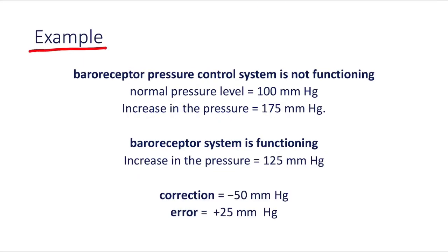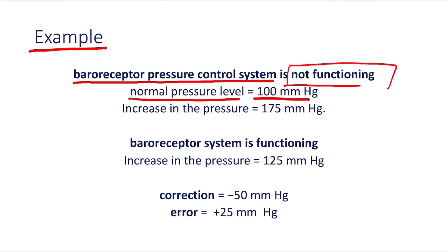Now let us see an example. We will look at the baroreceptor pressure control system. In this system, suppose the normal pressure level is 100 mmHg, and there are two conditions: one where the system is not functioning and one where the system is functioning.